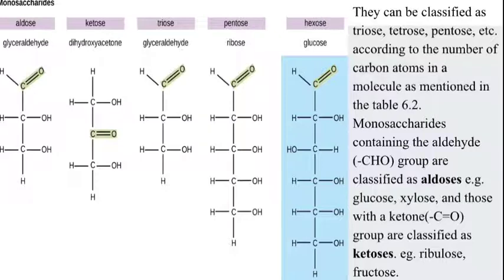Monosaccharides containing an aldehyde group are classified as aldoses — for example, glucose and xylose. Those with a ketone group are classified as ketoses — for example, ribulose or fructose.